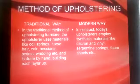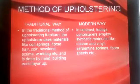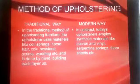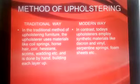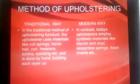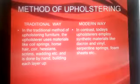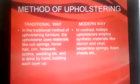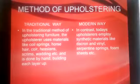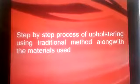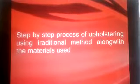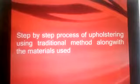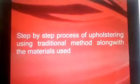In contrast to the traditional way, today's modern upholstery employs synthetic materials like Dacron and vinyl, serpentine springs, foam sheets, and similar materials. Today we will focus on learning the traditional method of upholstery and its step-by-step process along with the materials used.